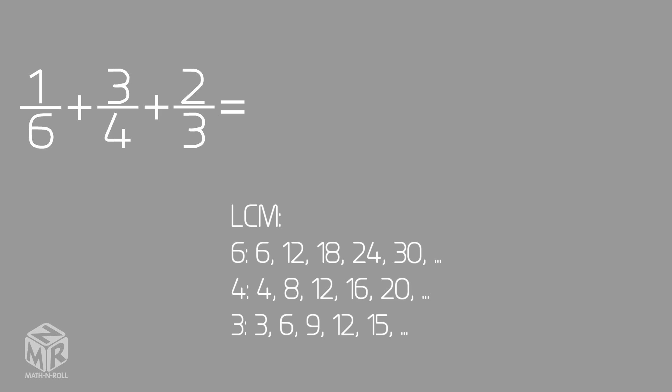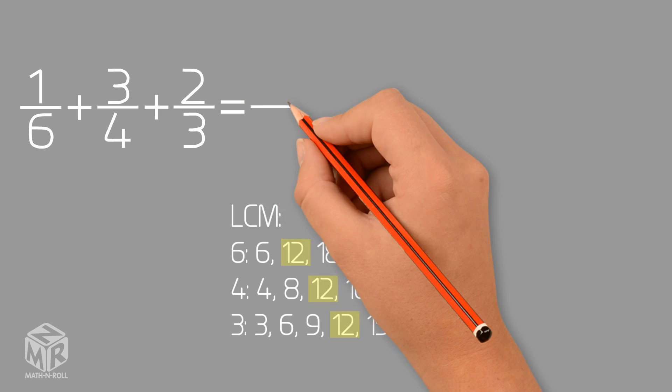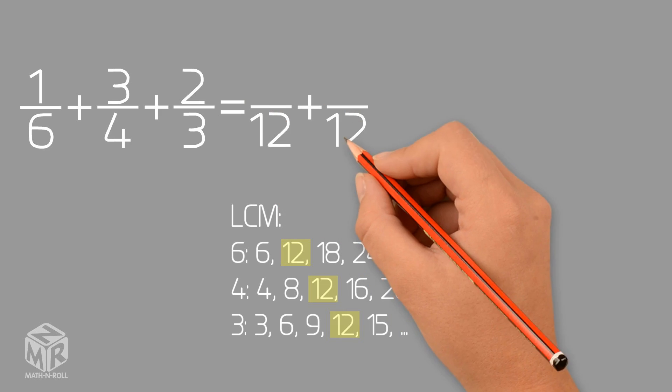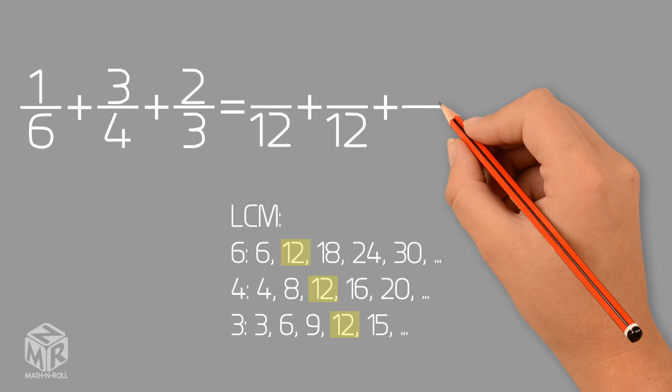For 6, 4, and 3, the least common multiple is 12. So the least common denominator will be 12.